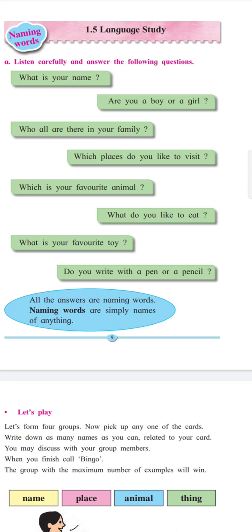Which is your favorite animal? Which animal do you like the most? Tiger — that is a name. What do you like to eat? I like to eat chocolates, ice cream, mango, orange.